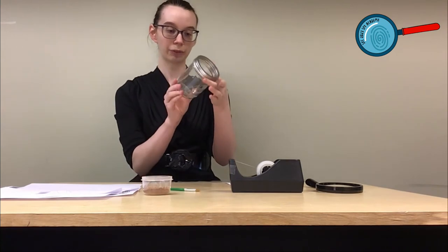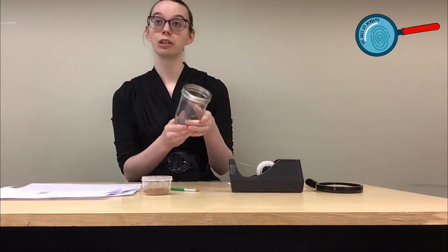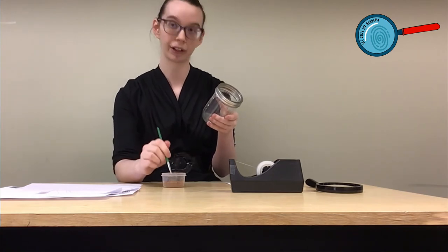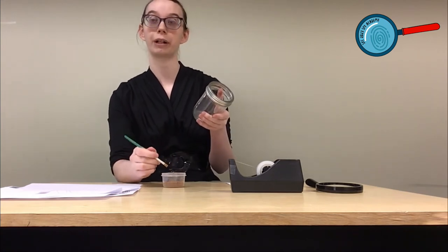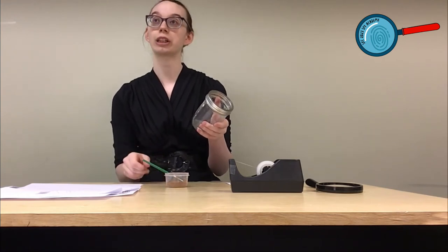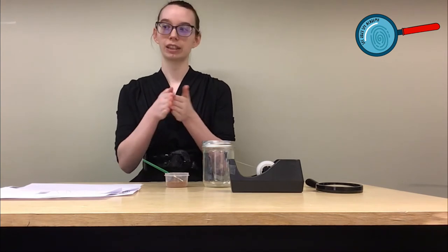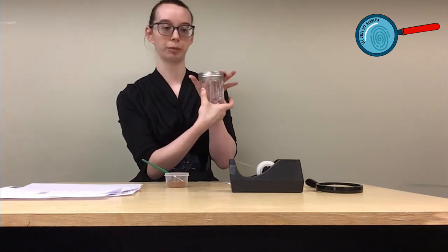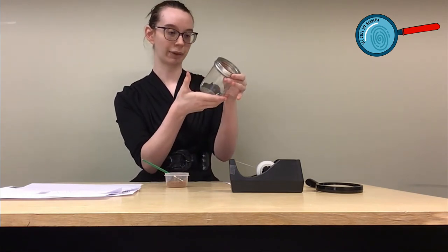So to dust for fingerprints, you're going to use your brush and you're going to carefully apply cocoa powder over the object where a fingerprint might be. For training purposes, you can also ask someone to leave some fresh prints for you to find. To do that, you would rub your hands together. This is going to bring the oils from your hand to the surface and then press onto an object. Now we have our fingerprint.